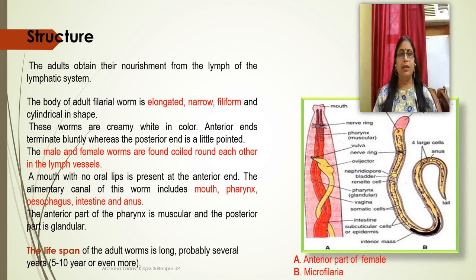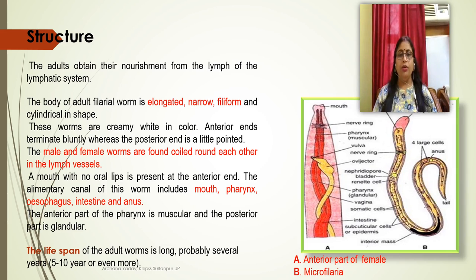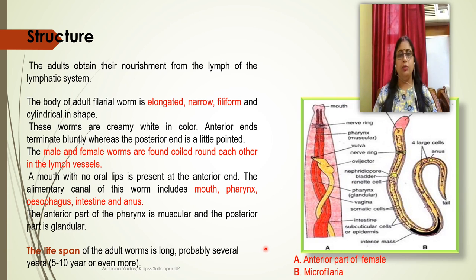Regarding structure, adult worms obtain their nourishment from the lymph of the lymphatic system. The body of the adult female is elongated, narrow, and spindle-shaped. These worms are creamy white in color, with the anterior end bluntly rounded.